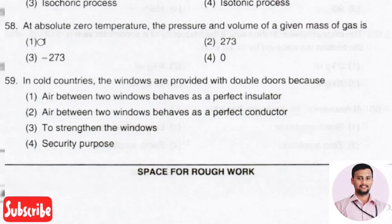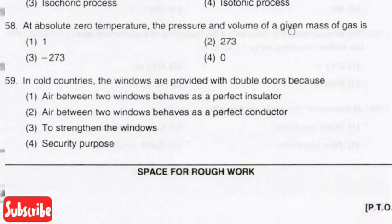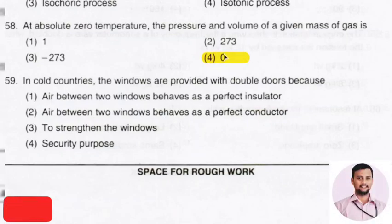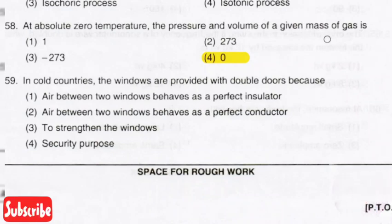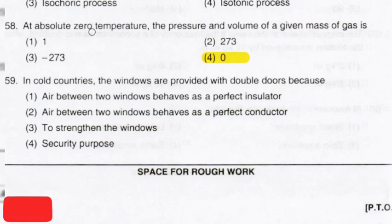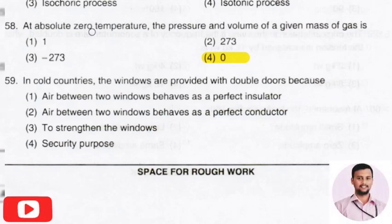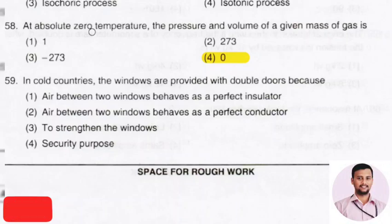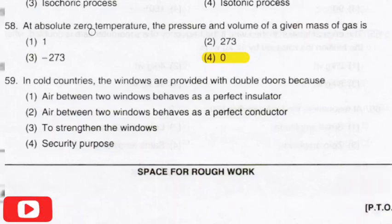The next question: at absolute zero temperature, the pressure and volume of a given mass of a gas is? The right answer is option 4, that is zero. The pressure and volume of a given mass of a gas will be zero at absolute zero temperature, as the gas behaves as an ideal gas at that condition.